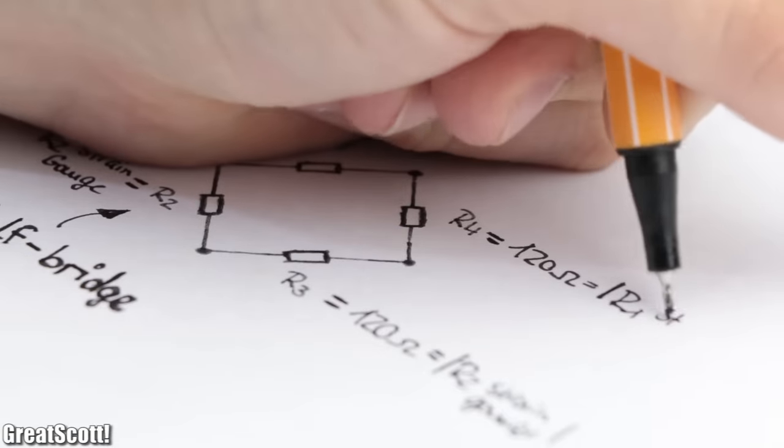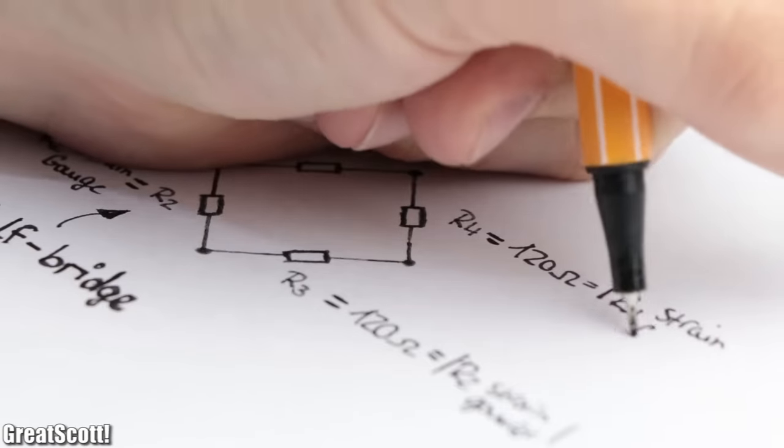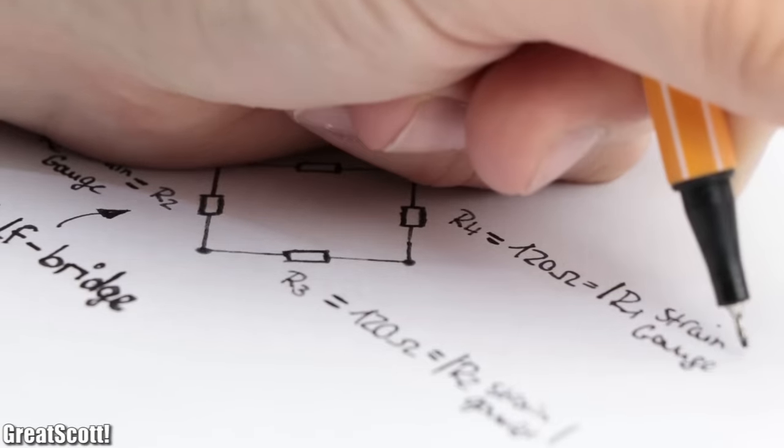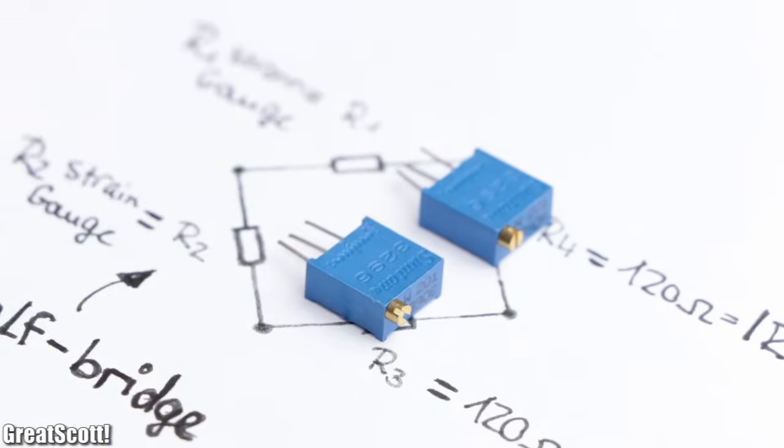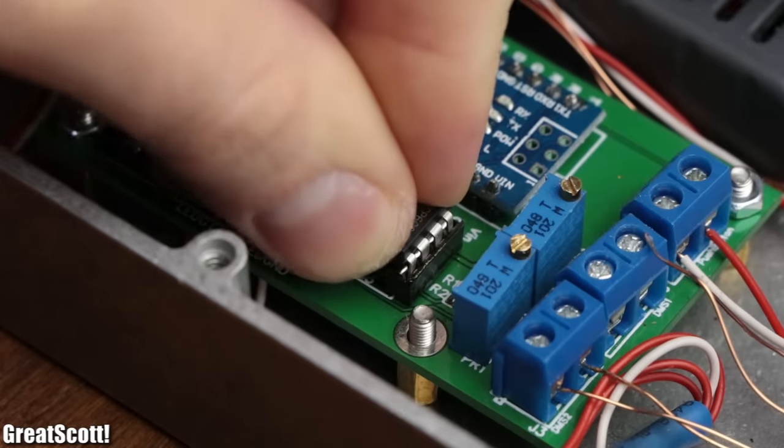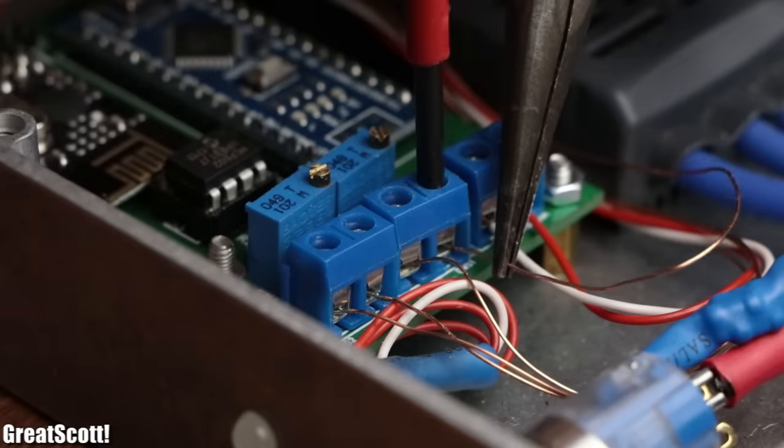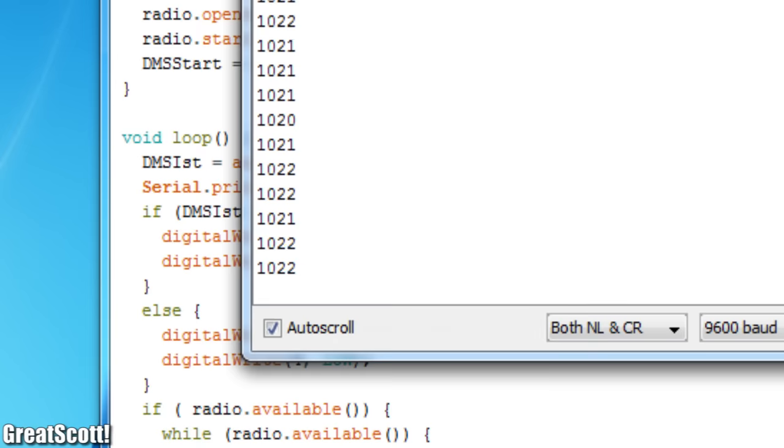Now to easily adjust the resistance values of R3 and R4 corresponding to the strain gauge values, it is recommended to utilize 10 turn trimmers, so that after building up the circuit and connecting the strain gauges,